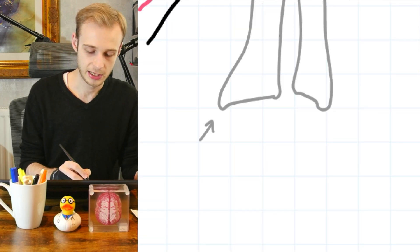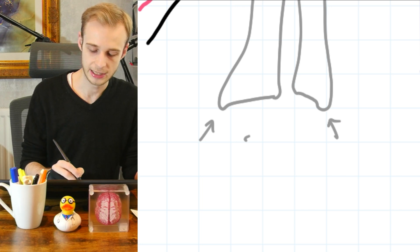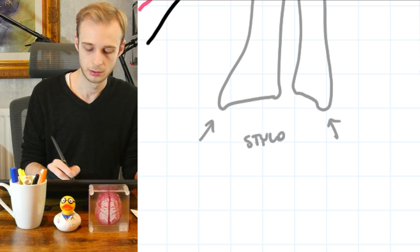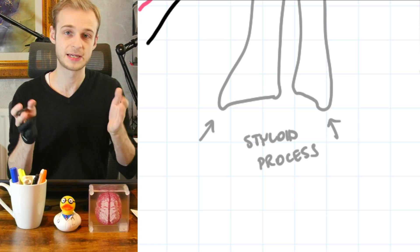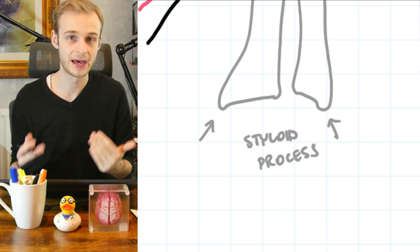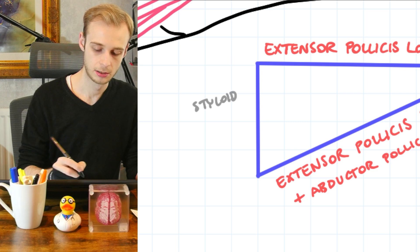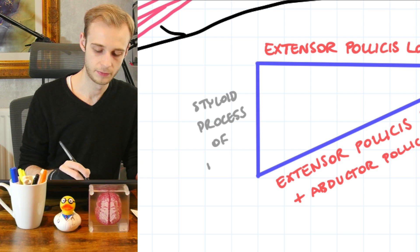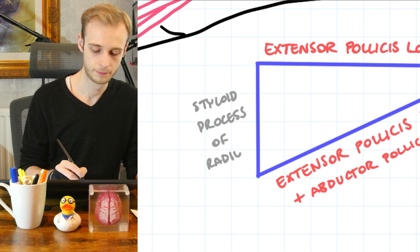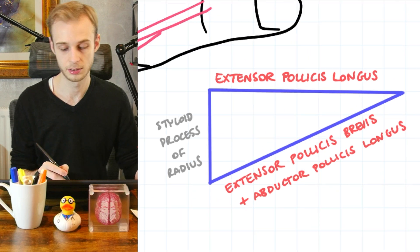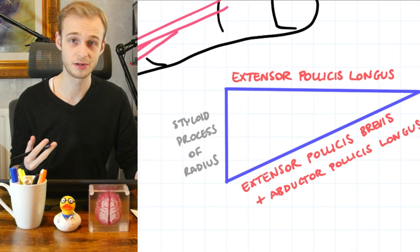Each of the radius and the ulna have what's called a styloid process. A little process that sticks off and it looks like the nib of a pen or a stylus. It's actually that styloid process of the radius that forms the proximal border of the triangle that makes up the anatomical snuffbox.